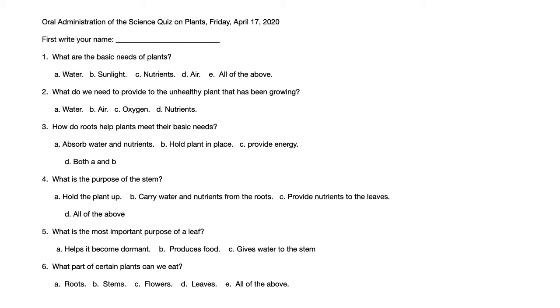Number 5. What is the most important purpose of a leaf? A. Helps it become dormant. B. Produces food. C. Gives water to the stem.